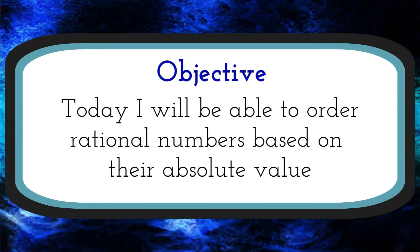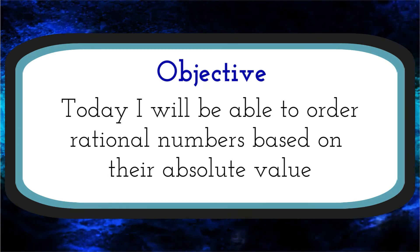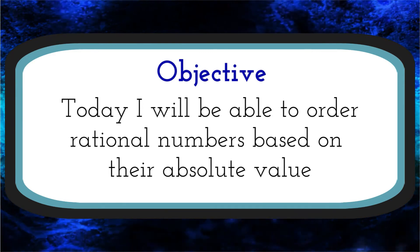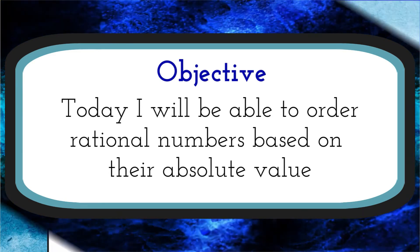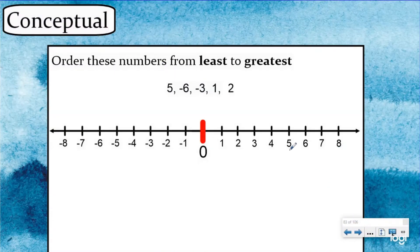We've been doing a lot of ordering and comparing rational numbers using their actual value. Today we're going to be looking at absolute value as we order them. Here's the type of question we have been doing — we want to order these numbers from least to greatest using their value. So the first thing we want to do is put them on the number line. I have positive five, negative six, one, negative three, and positive two.